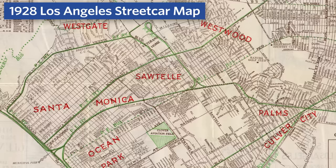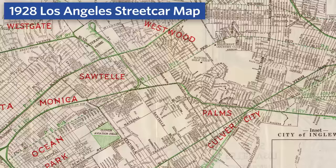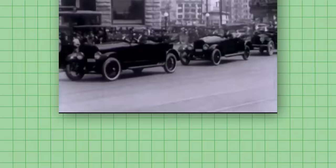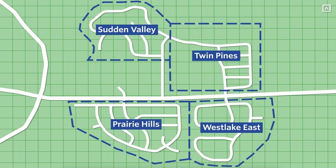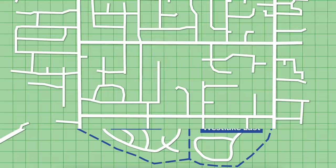Streetcar suburbs were typically laid out in the same grid pattern that made land speculation so easy, and also made it easy for people to walk to nearby streetcar stops. But as cars became more popular, real estate developers could design neighborhoods — often referred to as subdivisions — that didn't need to be near streetcar stops. These new subdivisions could also be smaller, as they didn't have to pay for the cost of a streetcar line. What you got were smaller, more irregular subdivisions in odd places.